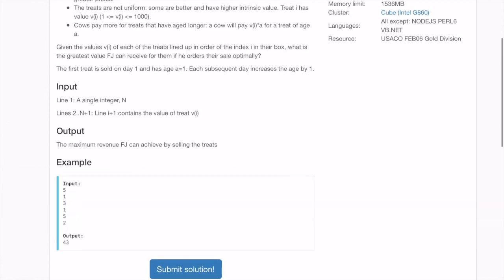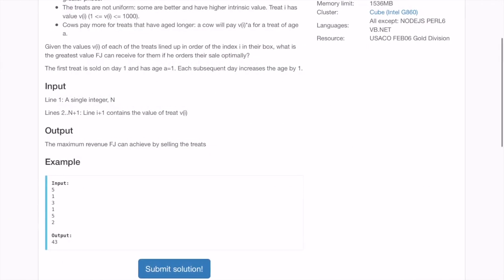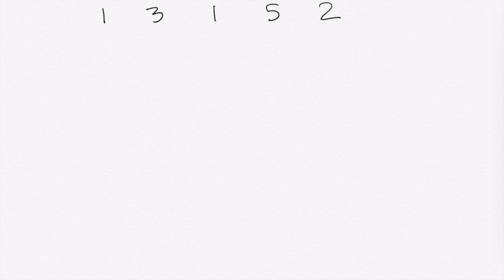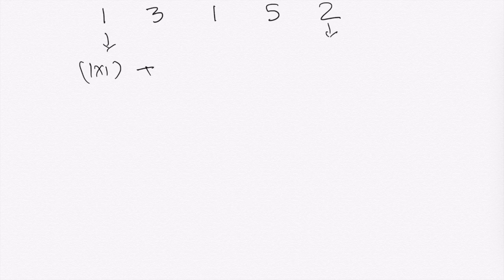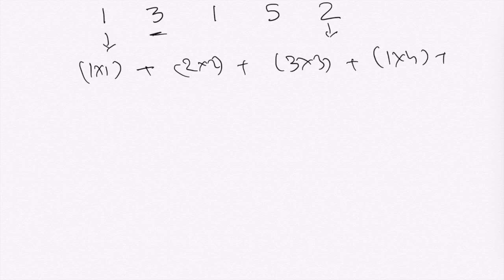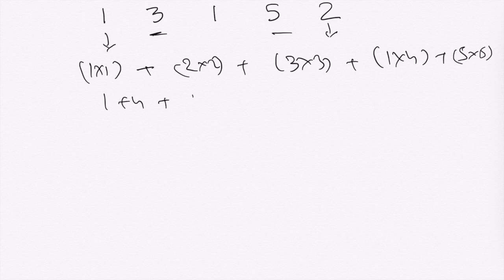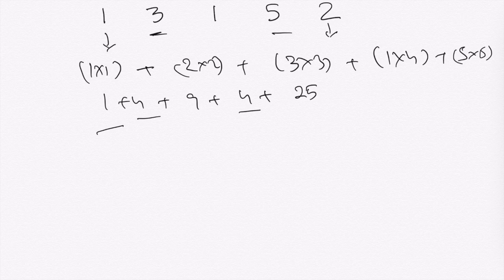The array is [1, 3, 1, 5, 2]. One solution: day one take treat 1 (1×1=1), day two take treat 2 (2×2=4), day three take treat 3 (3×3=9), day four take treat 2 (2×4... wait, 1×4=4), day five take treat 5 (5×5=25). That gives 1+4+9+4+25=43. This could be one of many solutions.